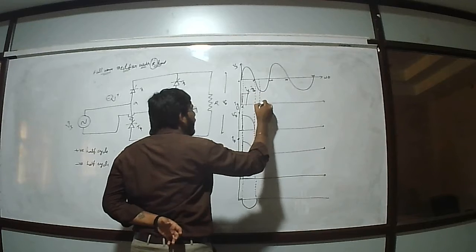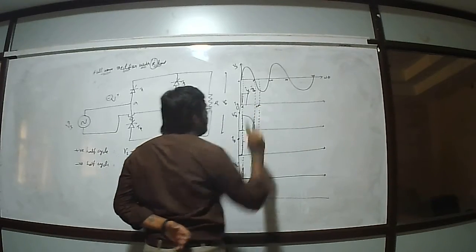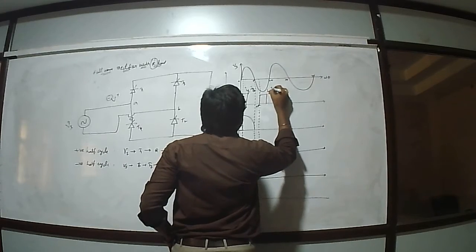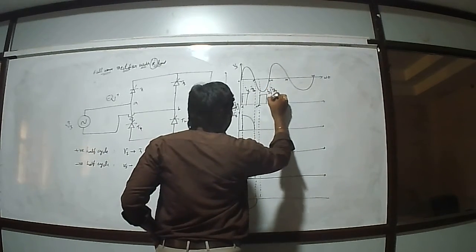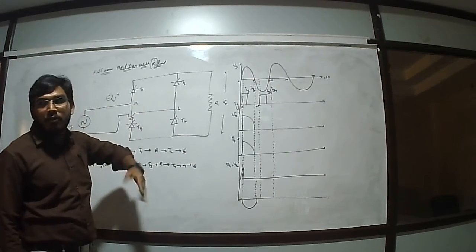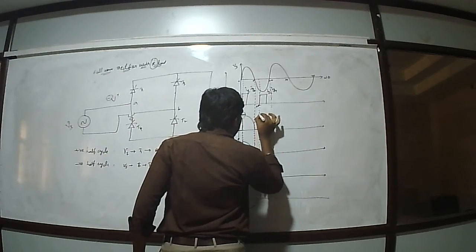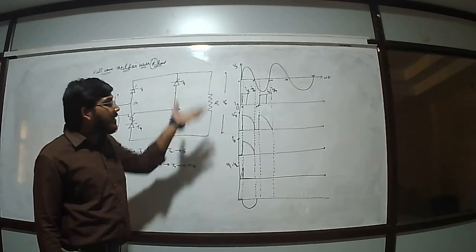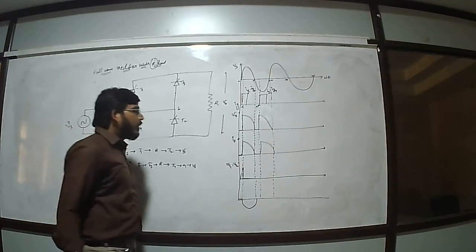The firing angle for the negative half cycle is pi plus alpha, applied to the gate terminals IG3 and IG4. Up to pi plus alpha, the thyristors T3 and T4 are in forward blocking mode. At the firing angle pi plus alpha, the thyristors start conducting up to 2 pi. The entire output voltage reflects at the load side, and the output current value also reflects at the load side after giving the firing angle to thyristors T3 and T4.